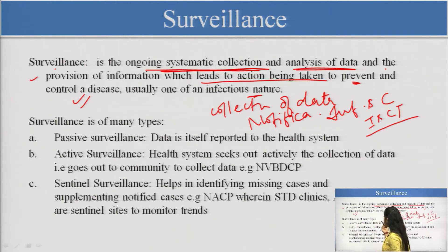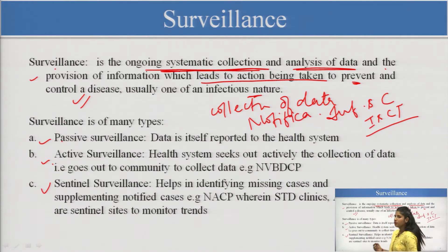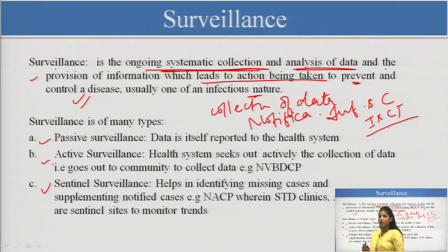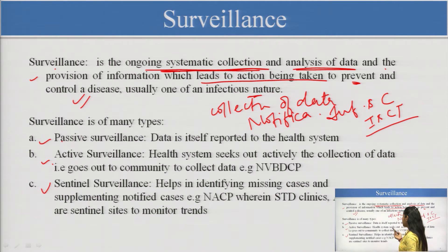Surveillance is of many types — there are three types: passive, active, and sentinel. In passive surveillance, data is itself reported to the healthcare system. The patients are going to hospitals, approaching healthcare centers, telling about their problems, doing follow-ups. The data reported in that manner is called passive surveillance, where the patients or consumers are approaching the system.